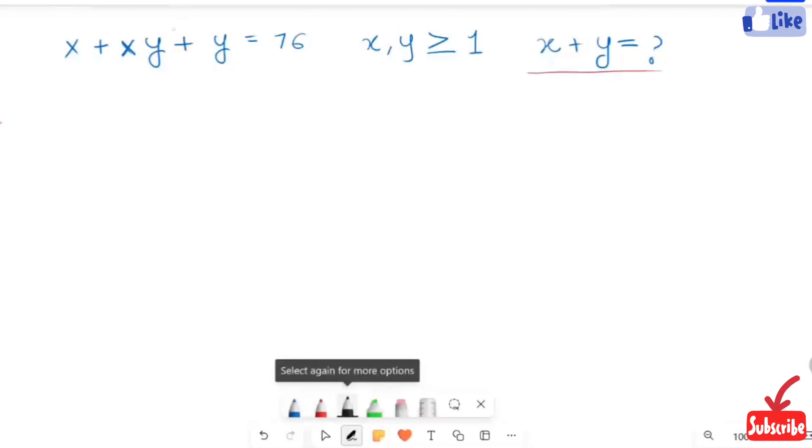So here I'm going to take out the factors first from these two terms. So here x is our factor and 1 plus y plus y is equal to 76.